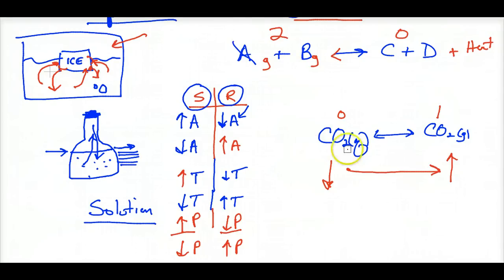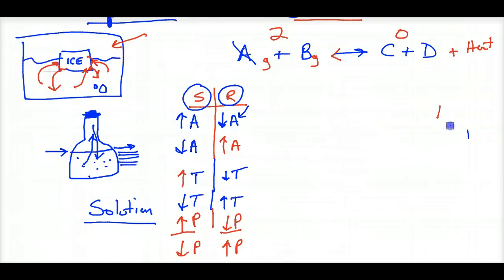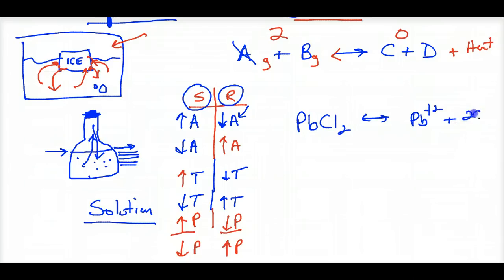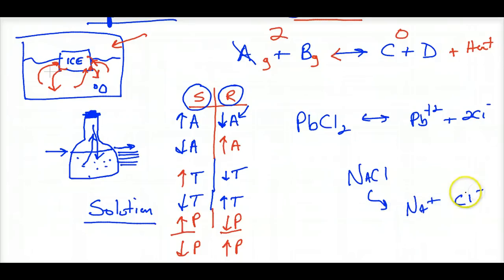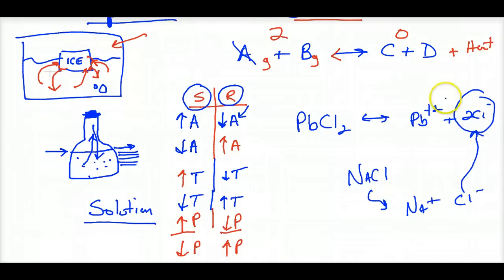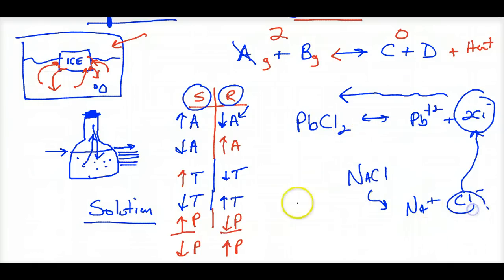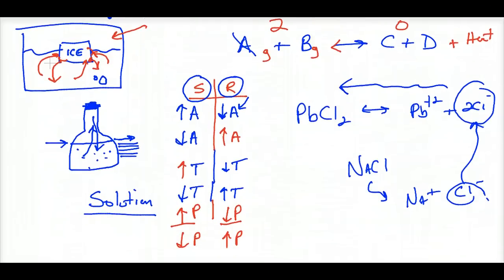There's also the common ion effect. If I have PbCl2 in equilibrium with its ions and I add sodium chloride, the NaCl breaks into Na+ and Cl-. This greatly increases chloride concentration, and the reaction shifts left to lower it — forming more solid precipitate. That's Le Chatelier's principle: the common ion forces the equilibrium back toward the solid.